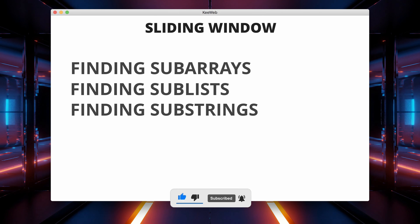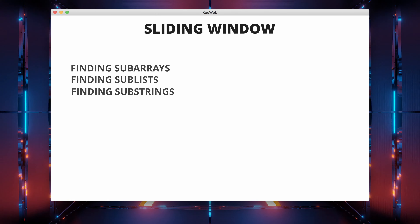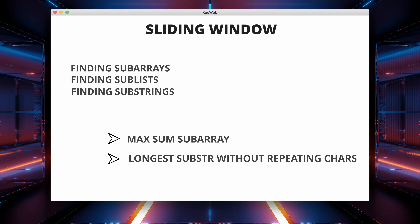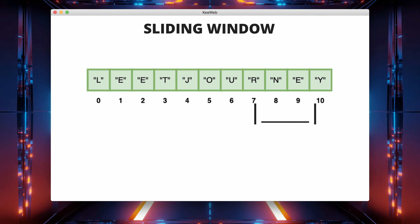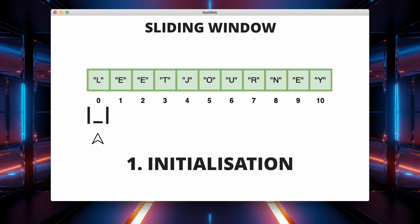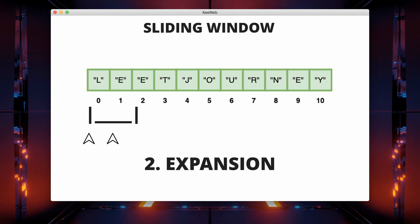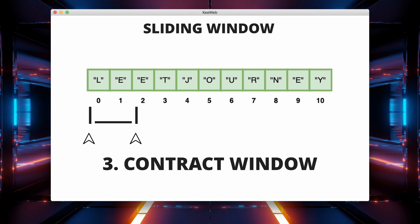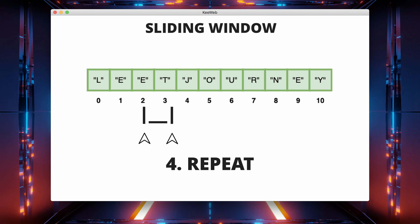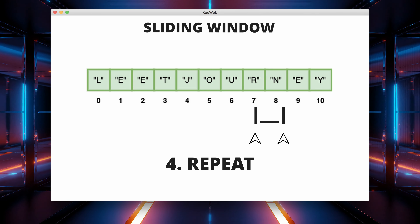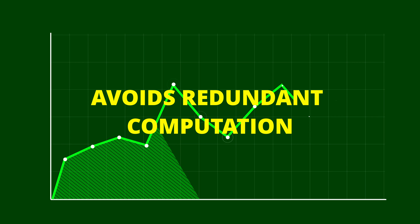This pattern is particularly useful when dealing with problems that require you to find a subarray, sublist or substring that satisfies a specific condition, like the maximum sum of a subarray, the longest substring without repeating characters, or the minimum size subarray with a given sum. Here's a general outline of how it works: first, initialization — set up two pointers, usually at the beginning of the array or string. Then expand the window by moving the right pointer to add elements. Then contract the window — if the current window satisfies the given condition, try to minimize or maximize it by moving the left pointer. Continue until you've processed the entire string or array. This pattern helps optimize time complexity by avoiding redundant computations.